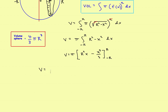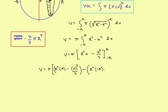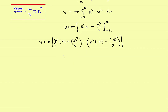Plugging in: first substitute x equals r to get r squared times r minus r cubed over three. Then substitute x equals negative r to get r squared times negative r minus negative r cubed over three. Subtract the second result from the first and put the whole thing in brackets.